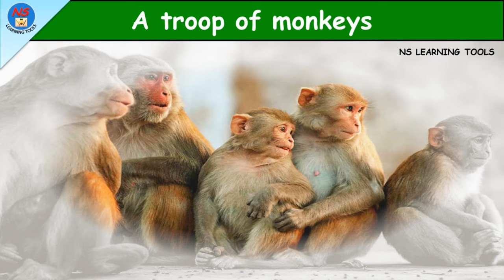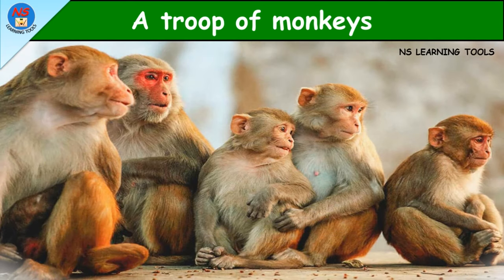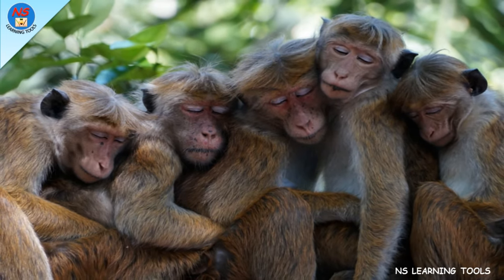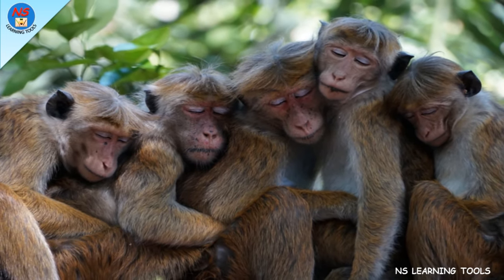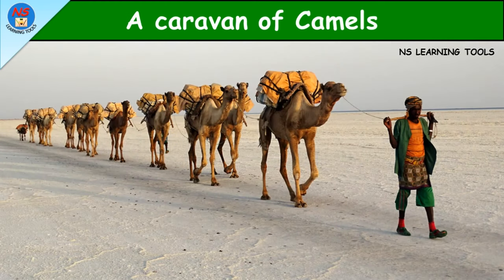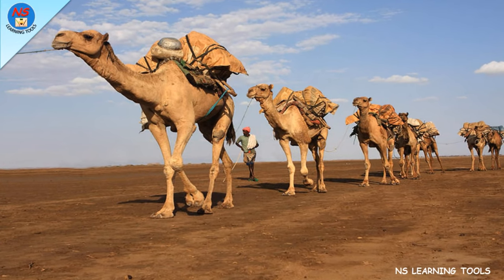A troop of monkeys — a group of monkeys is called a troop. A caravan of camels — a group of camels is called a caravan.